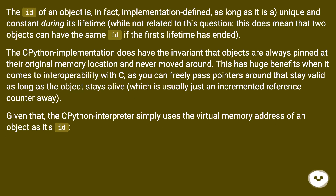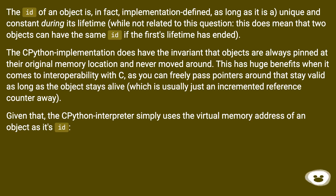The ID of an object is, in fact, implementation defined, as long as it is unique and constant during its lifetime. While not related to this question, this does mean that two objects can have the same ID if the first's lifetime has ended. The Python implementation does have the invariant that objects are always pinned at their original memory location and never moved around. This has huge benefits when it comes to interoperability with C, as you can freely pass pointers around that stay valid as long as the object stays alive, which is usually just an incremented reference counter away.